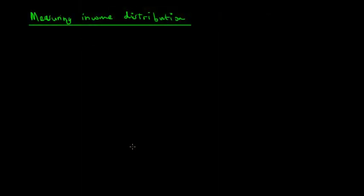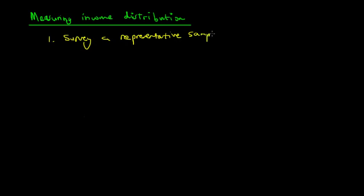This lecture will focus on how the ABS seeks to measure the income distribution in Australia. The ABS measures income distribution by first taking a survey of a representative sample — as close to representative as possible — of 0.2% of the population. They get trained interviewers to ask individual questions regarding the sources and nature of income of different households in that 0.2%.